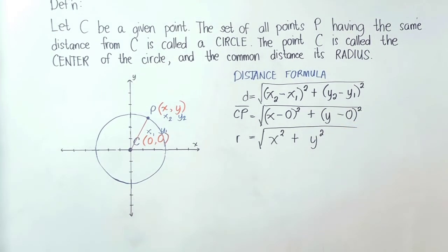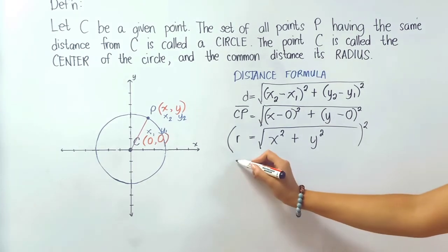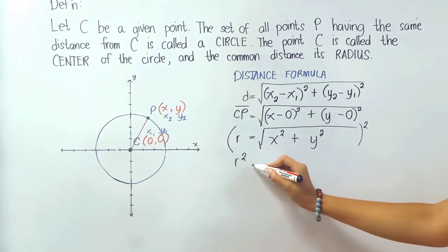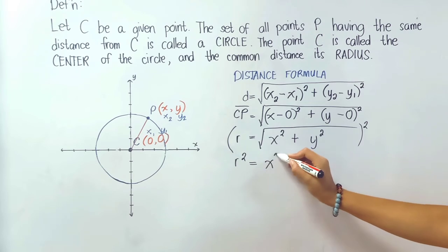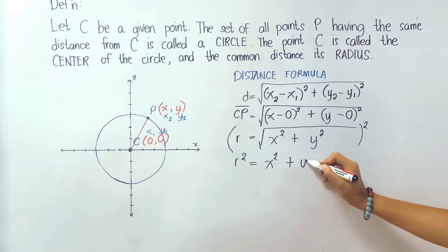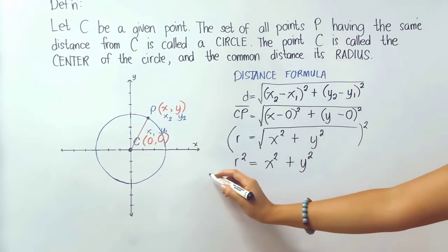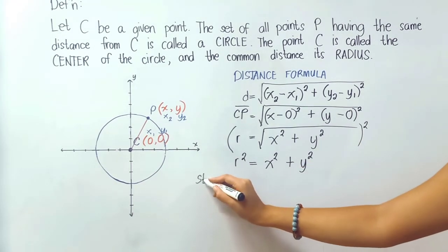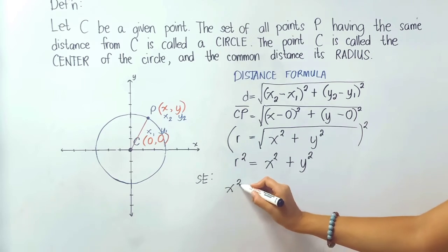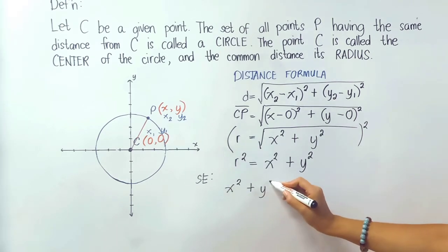Now we want to get rid of the square root so we will square both sides here and we'll have r squared is equals to x squared plus y squared. So we just got the standard equation of the circle. It's x squared plus y squared is equal to r squared.